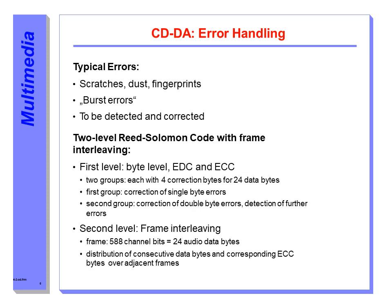In the second level, by using the frame interleaving operation, consecutive data bytes are distributed over multiple frames. The frame consists of 588 channel bits, which equals 24 audio data bytes. Audio data are stored interleaved on the CDDA. In this way, a burst error will always damage only part of the data.